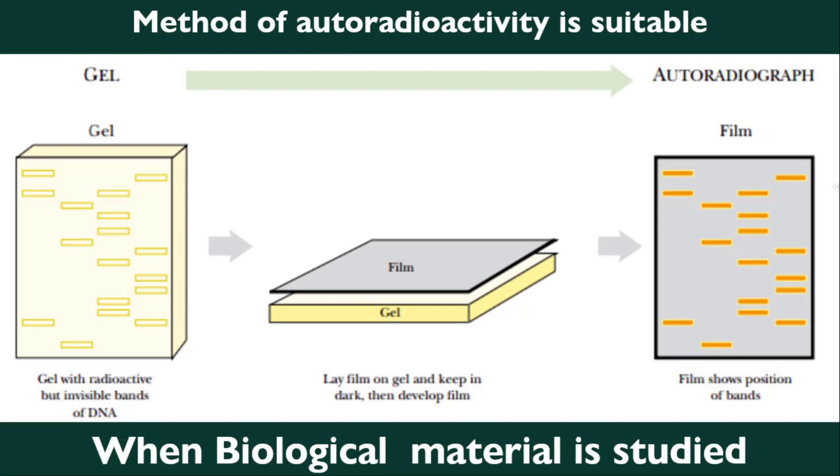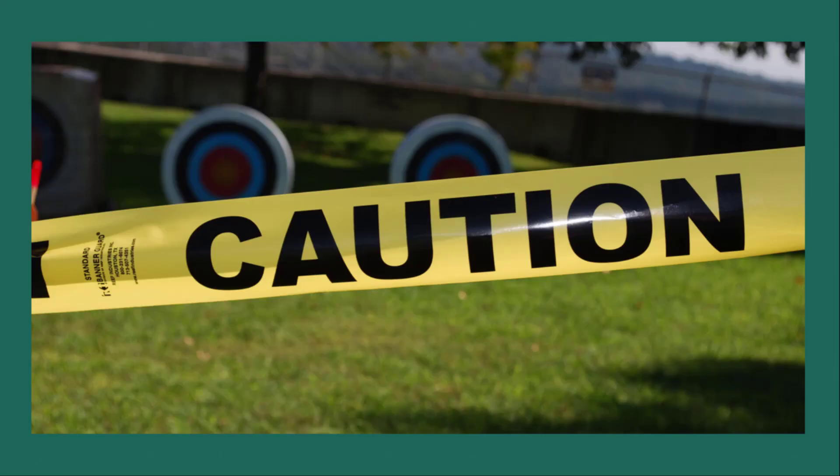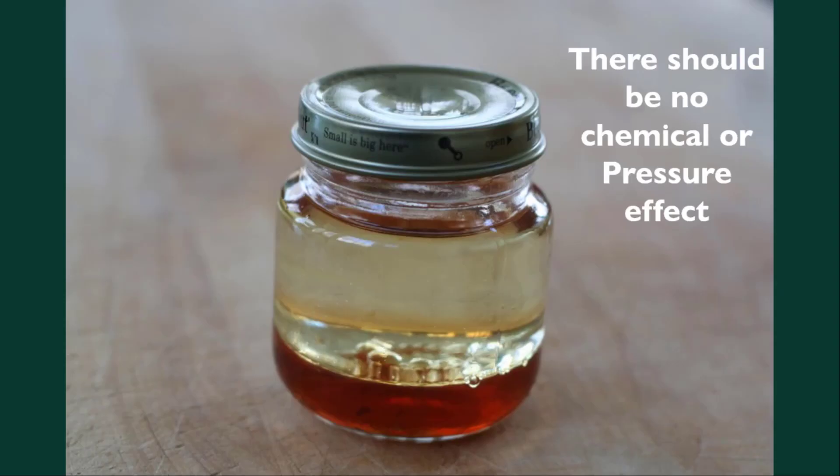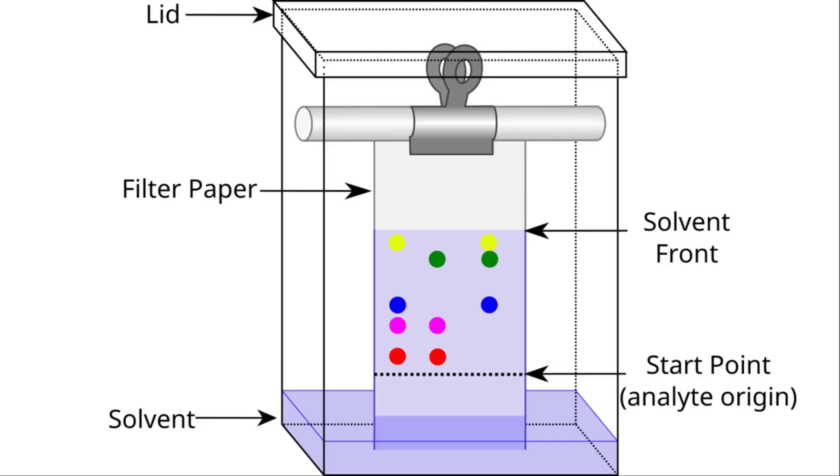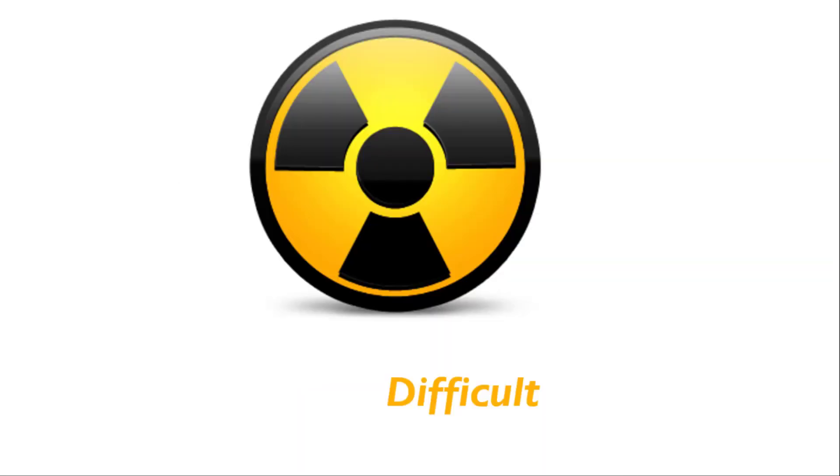Precautions are that there should be no chemical or pressure effect of the material on the emulsion, because this may produce an image. Autoradiography is frequently applied to the determination of components of paper or thin layer chromatograms, but the detection of radiation on a quantitative basis by this method is difficult or tedious.